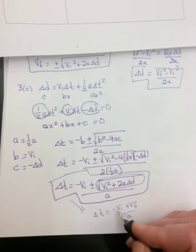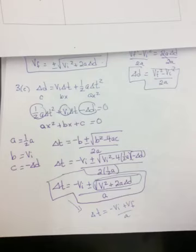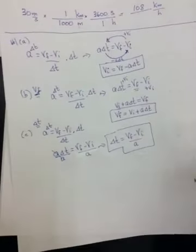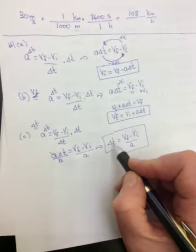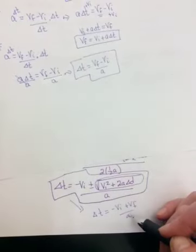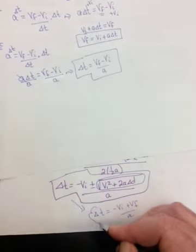So then that equation becomes delta T is equal to negative VI plus or minus VF over A. But if you go back to number 1C, we had found that delta T was equal to VF minus VI over A. It's the same thing.